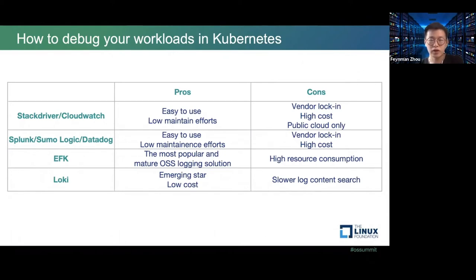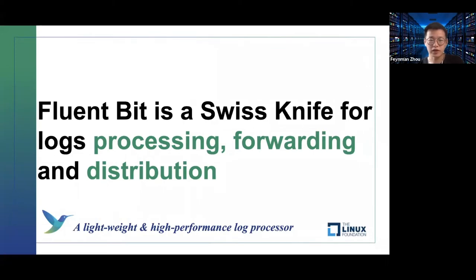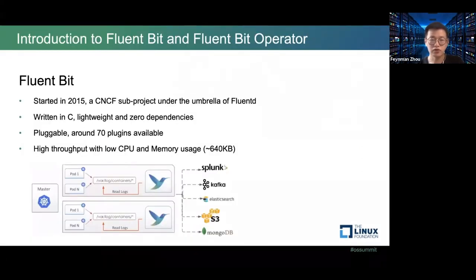Loki is a promising logging solution in the cloud-native ecosystem, but it changed its license a couple of months ago. In this session, we're going to deep dive into FluentBit and the FluentBit Operator. FluentBit is a lightweight and high-performance log processor. You can use FluentBit to process, forward, and distribute logs to different places — it's a Swiss Army knife for log processing. This project was founded in 2015, created by TreasureData.